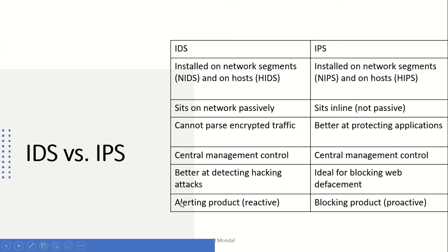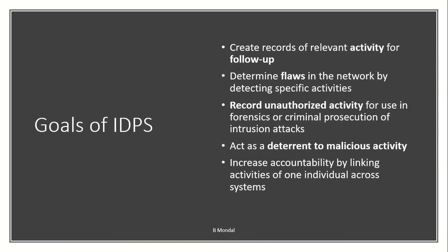There is a slide here showing the differences between IDS and IPS. The goals of intrusion detection and prevention systems include: creating records of relevant activity for future follow-up, determining weaknesses in the network based on detected activity, recording unauthorized activity, and acting as a deterrent to malicious activity.